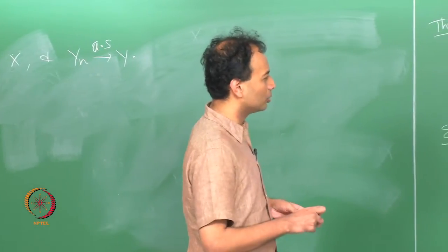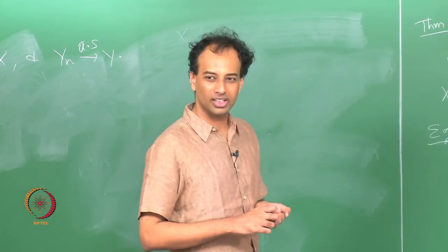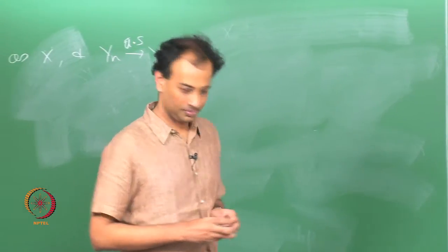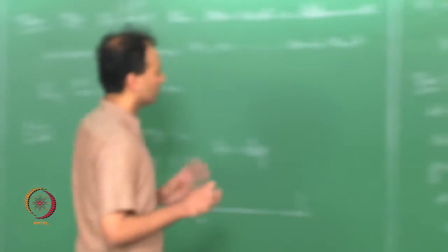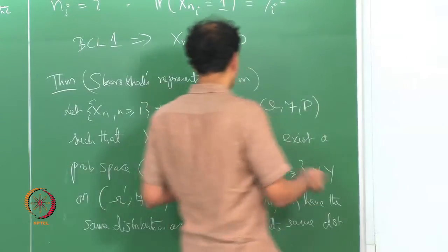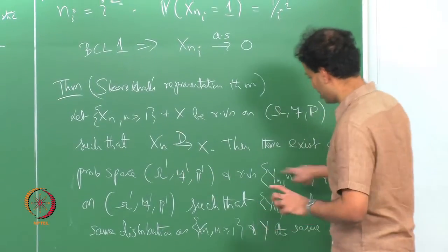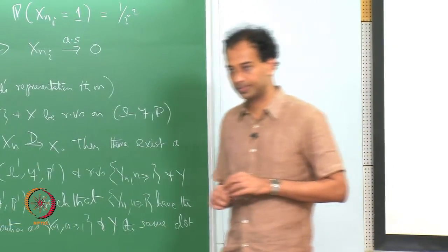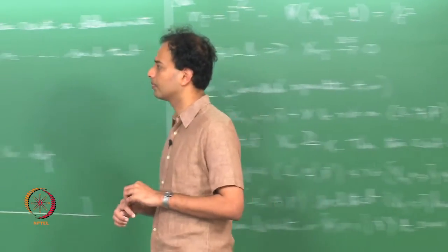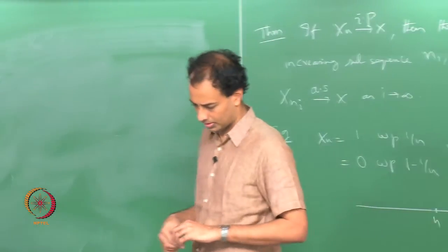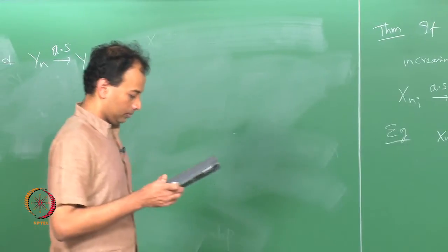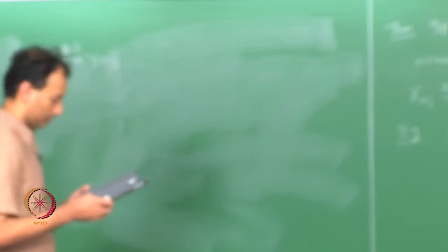The two probability spaces can be very different — this may be a space of coin tosses, this may be the real line or the [0,1] interval — but the distributions (CDFs) will be the same and the convergence will be almost sure, and the proof is constructive. This theorem is useful in several places, particularly when you are not really bothered about the specific probability space but only about the distributions.